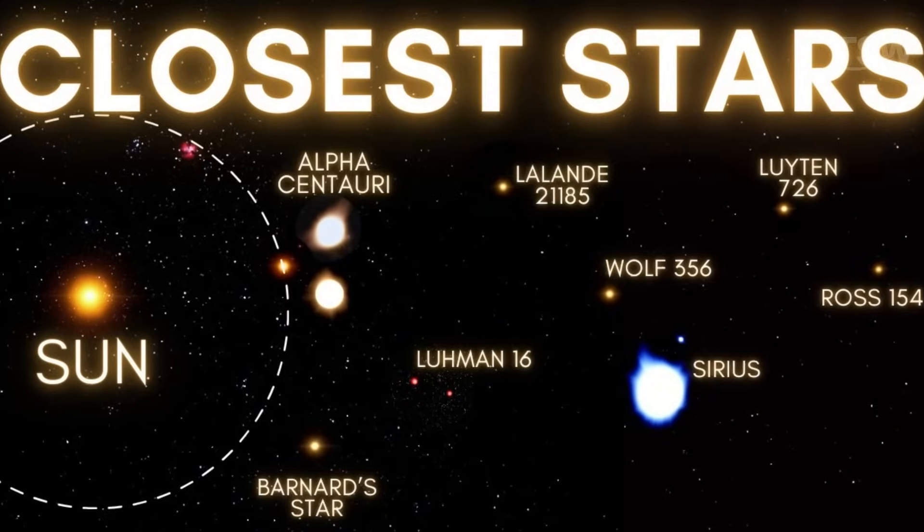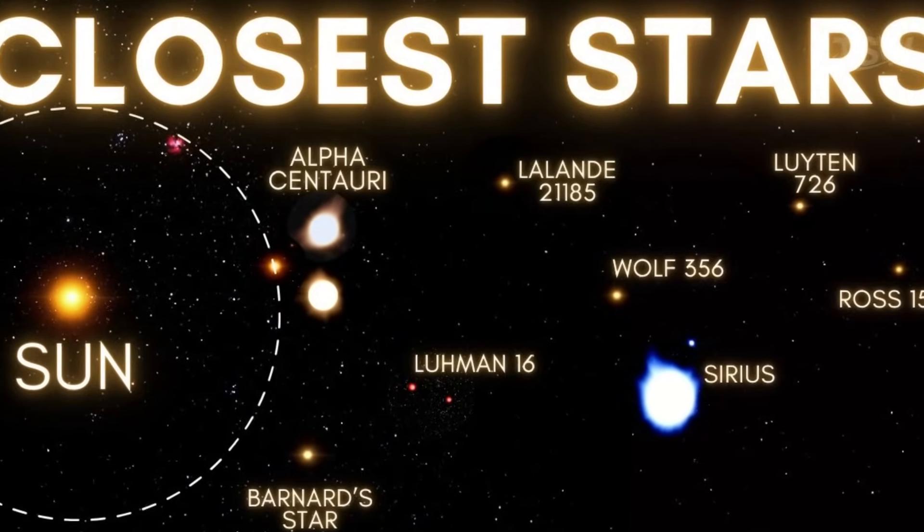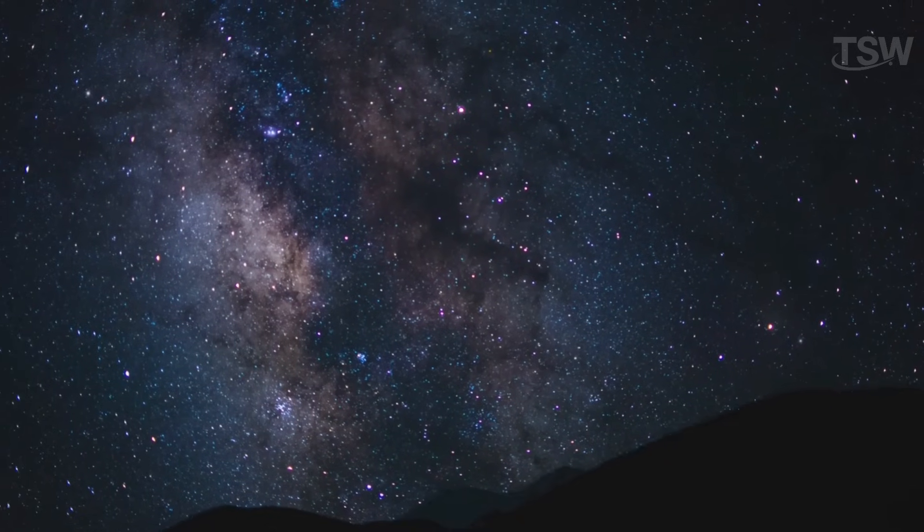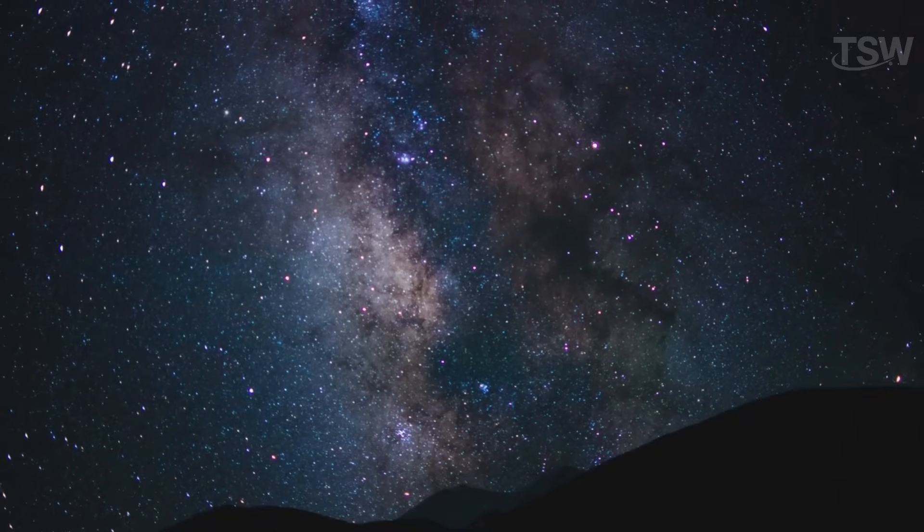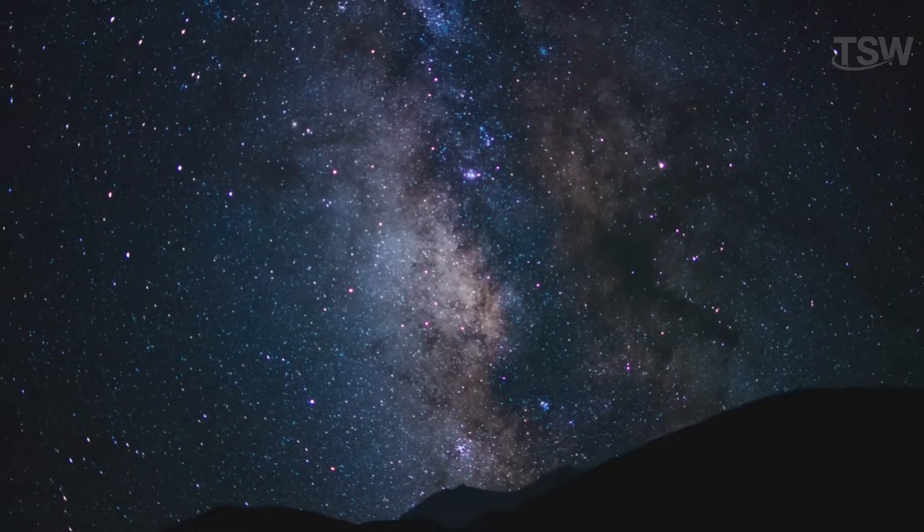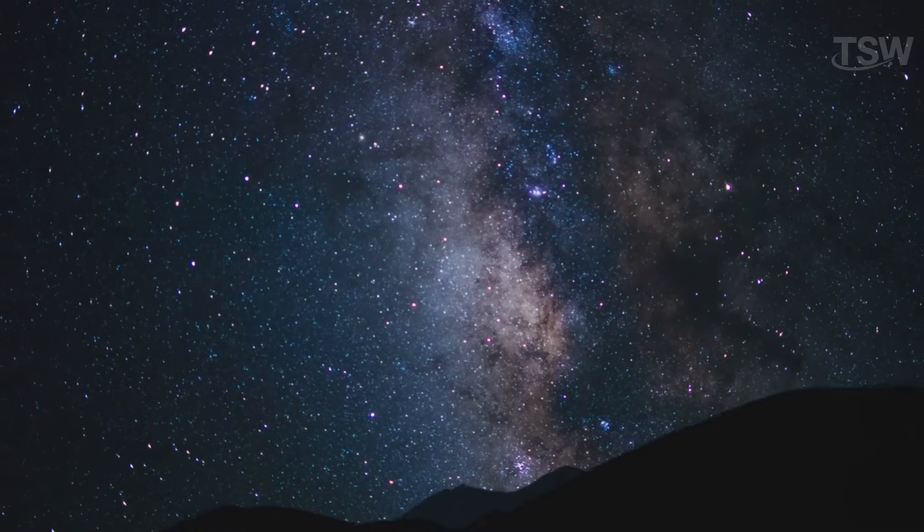Another key factor is the brightness of those stars. Even the ones relatively close to us, like Alpha Centauri or Sirius, don't emit enough light to noticeably brighten the night sky. The amount of light that reaches us is extremely small, just enough to appear as a bright dot, but far from enough to light up the space around us.